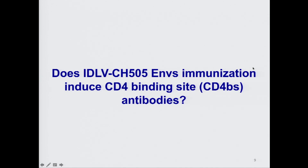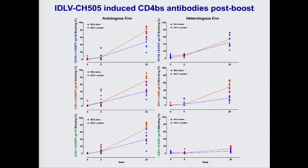Since the CH505 envelope induced CD4-binding site broadly neutralizing antibodies in the CH505 subject from which they were isolated, we then asked whether we induced CD4-binding site antibodies in the IDLV-vaccinated animals. We performed a competition assay using known CD4 bNAbs and soluble CD4. At the peak post-prime, we only saw very limited blocking in a few animals against bNAbs CH106 and CH31 and soluble CD4. But after the second immunization done at six months post-prime, we detected high blocking activity in most animals, with higher blocking activity in the group that received IDLV plus protein.